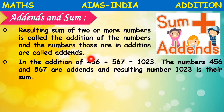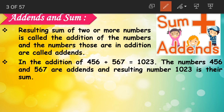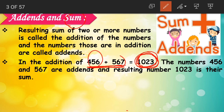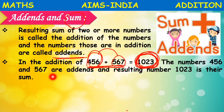The numbers used in addition are called addends. When we add two numbers, the result is called the sum. Sum means the addition of two or more numbers, and the numbers we used become the addends. For example, the numbers 456 and 567 are addends, and the resulting number 1023 is their sum.